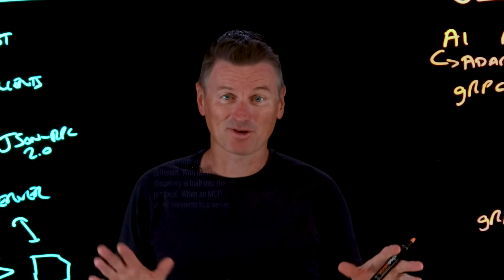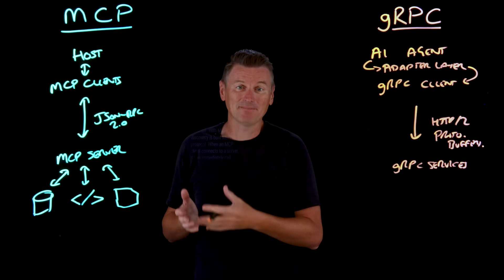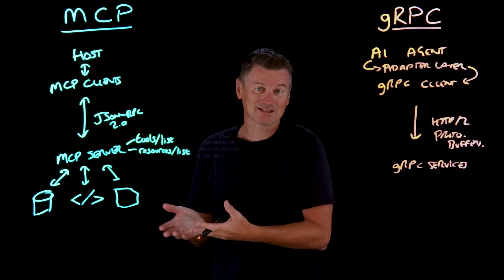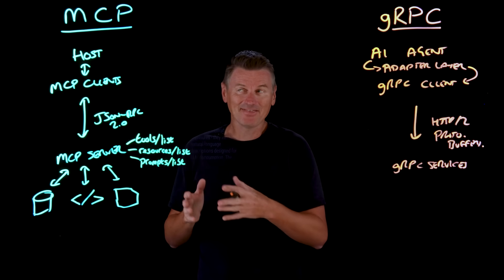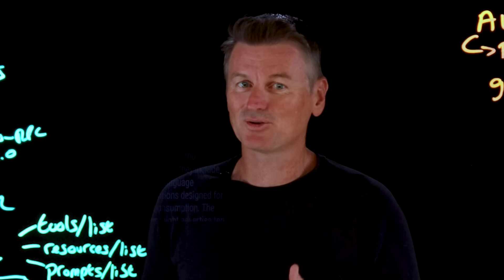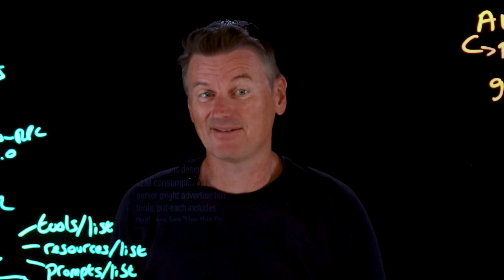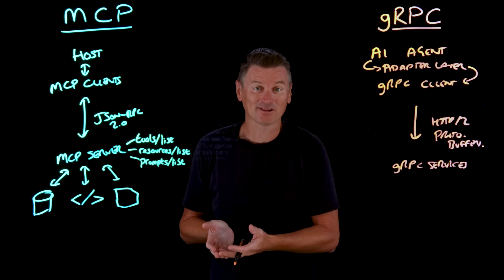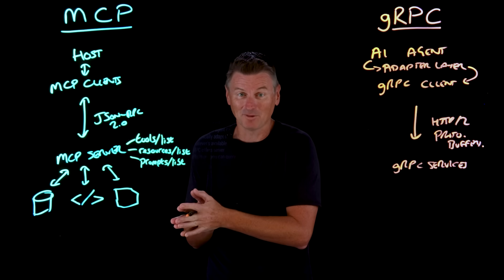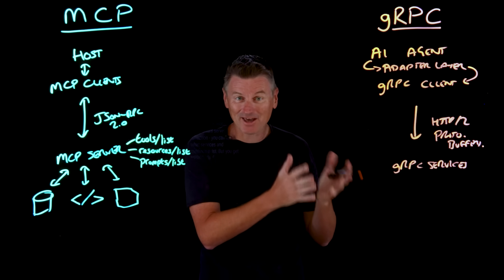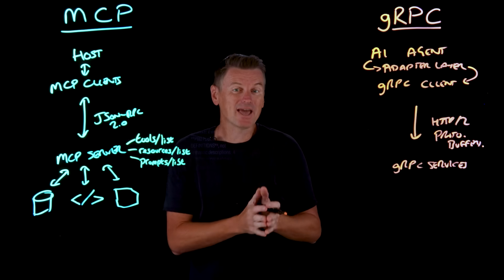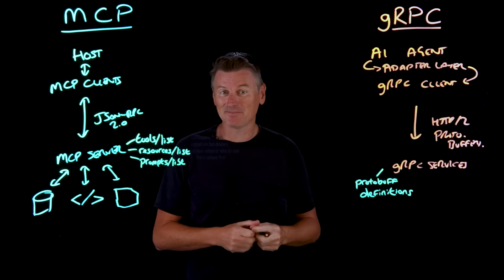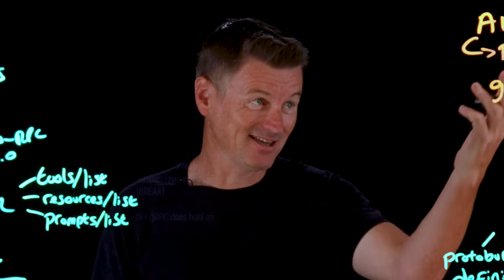Discovery mechanisms differ significantly. With MCP, discovery is built into the protocol — when a client connects to a server, it can immediately call tools/list, resources/list, or prompts/list to understand available capabilities. These responses include natural language descriptions designed for LLM consumption, like "use this tool for weather queries" or "call this one when the user asks for financial data," so the AI agent can dynamically adapt to what's available. gRPC offers server reflection — you can query what services and methods exist — but you get proto buff definitions, not semantic descriptions. A weather service might show a get_weather method signature but doesn't explain when or why to use it. That's where the adapter layer comes in.